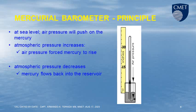At sea level, air pressure will push on the mercury. When atmospheric pressure increases, air pressure forces the mercury to rise. Then when atmospheric pressure decreases, mercury flows back into the reservoir.